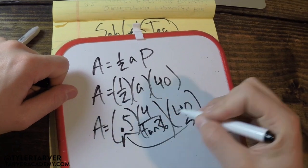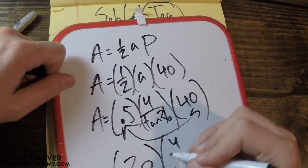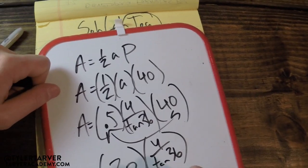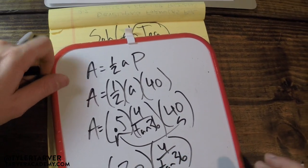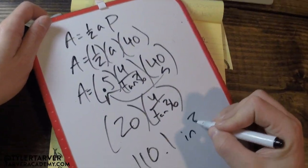If you wanted, you can go ahead and make it simpler. You know, 0.5 times 40 is going to be 20, because it's half of it. So you do 20 times 4 over tangent 36, and that's going to equal 110.1. And then we look back at our units, which were inches. It's area, so it's going to be inches squared.